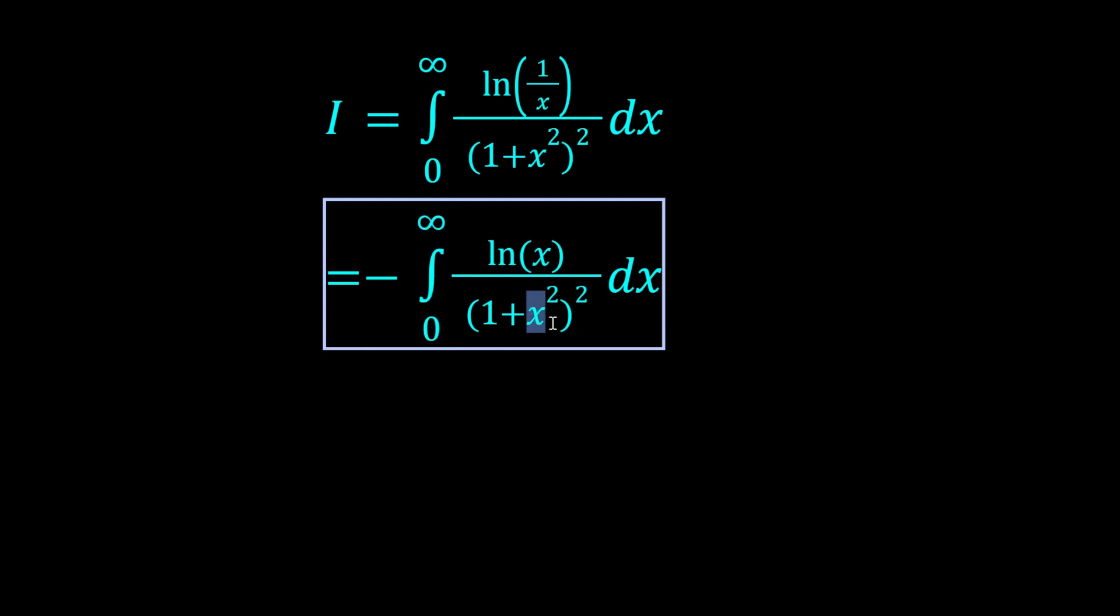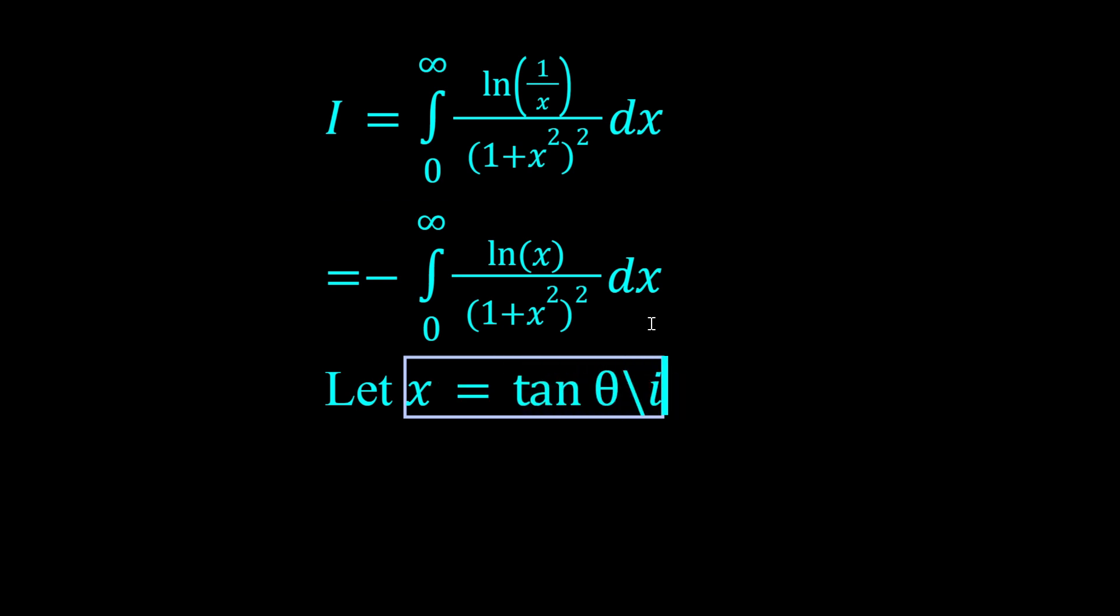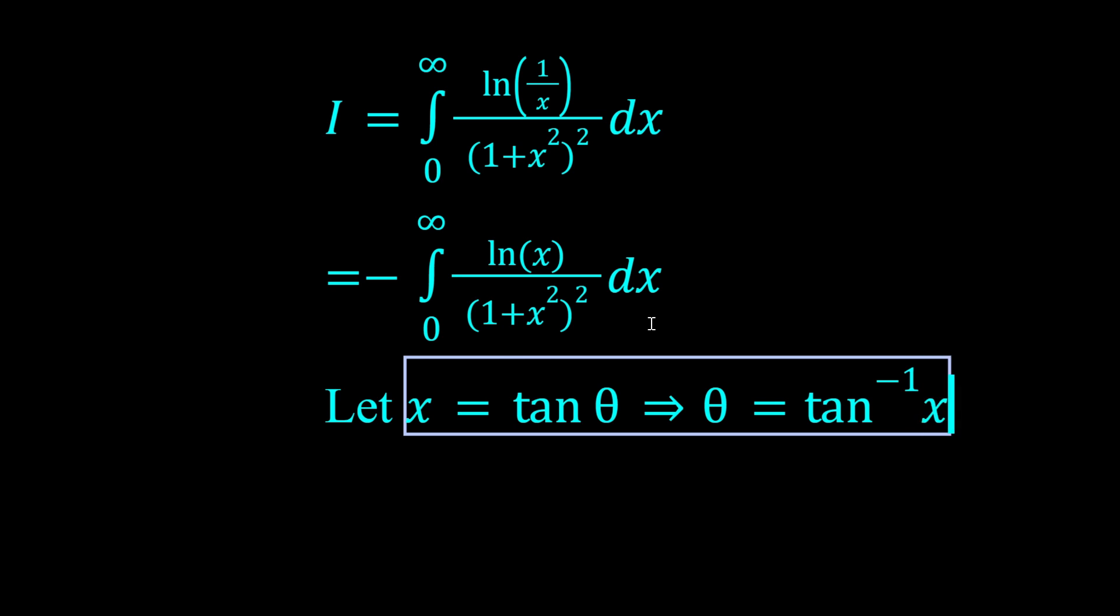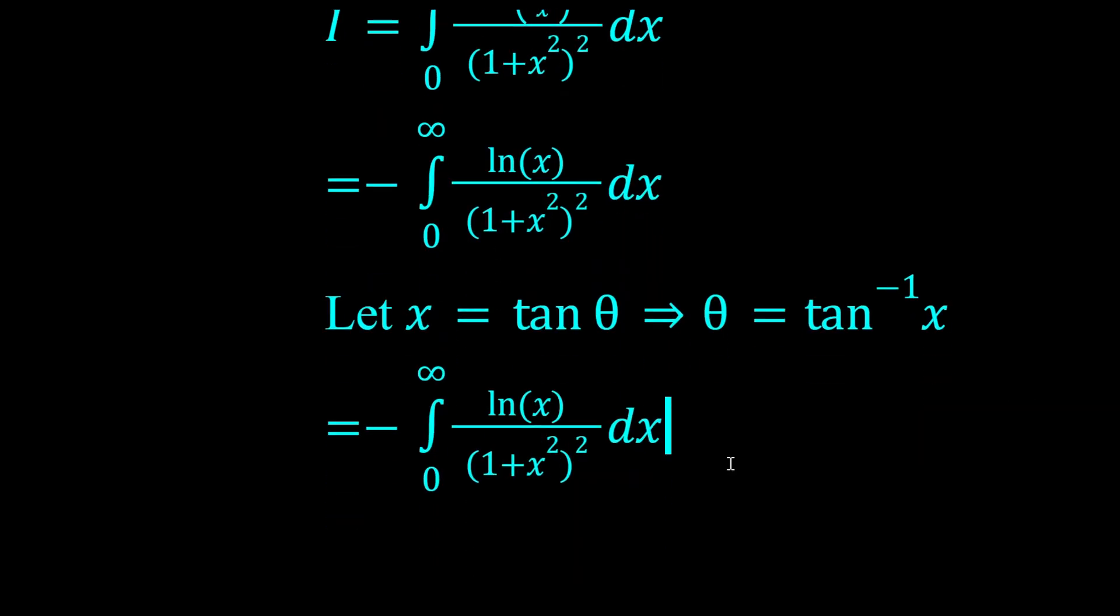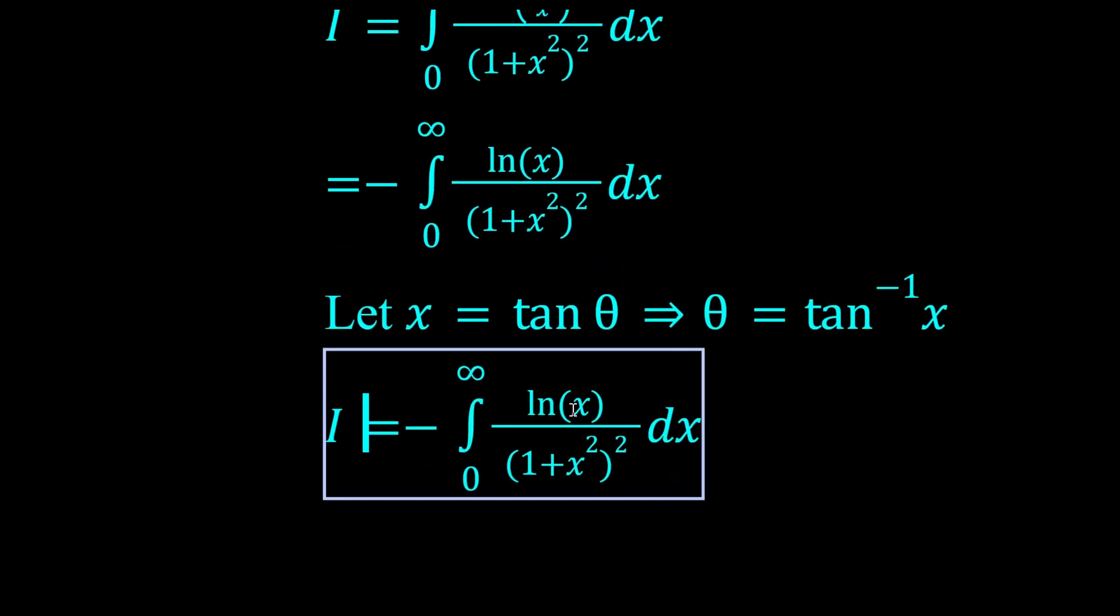Okay, so we have a few options. We're going to let x equal tan θ, and that's because of the 1+x² in the denominator. We could also have done a 1/x substitution because of the bounds, but this happens to be nicer.